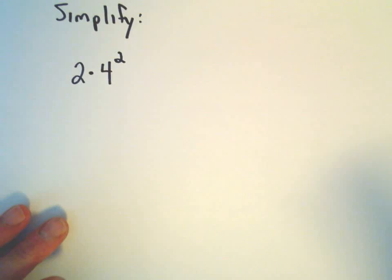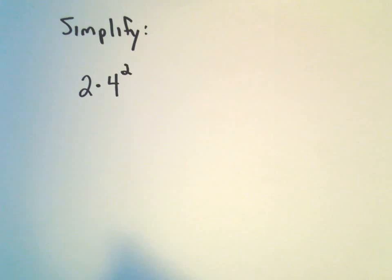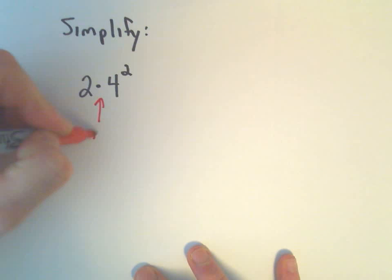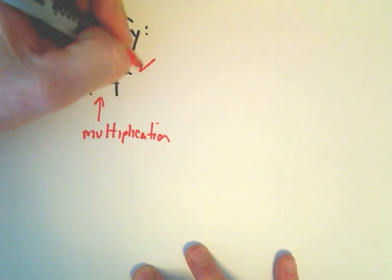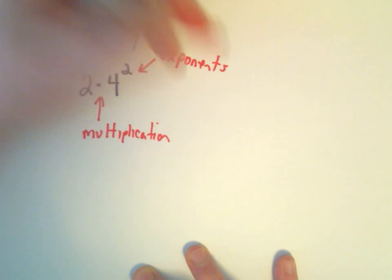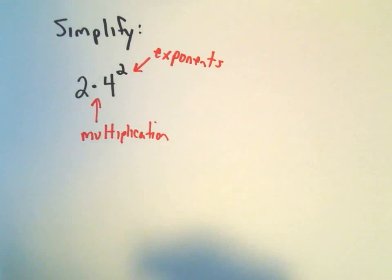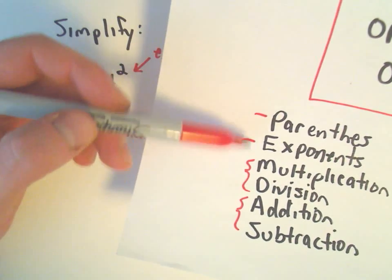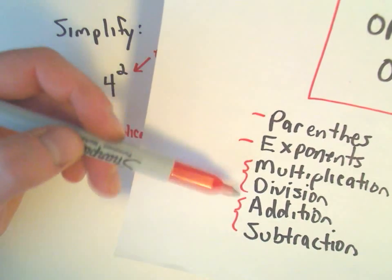So let's do a couple examples. So here we've got 2 times 4 squared. When I look at this I see 2 things happening. I see multiplication and then I also see exponents. Well, I think, which one of those 2 things do I do first? Well, it said in our little hierarchy, it said, hey, exponents come before we do any sort of multiplication.